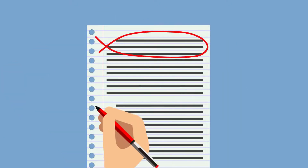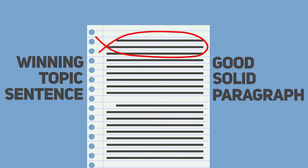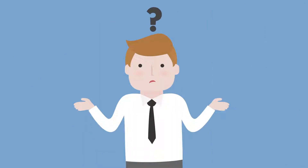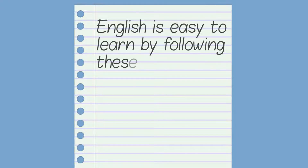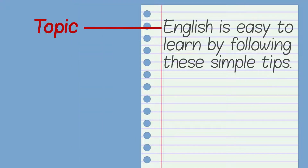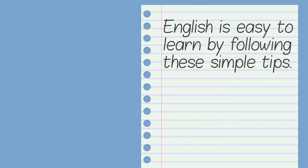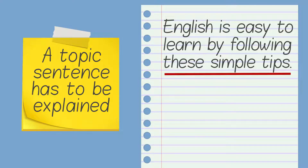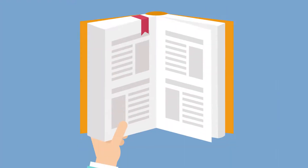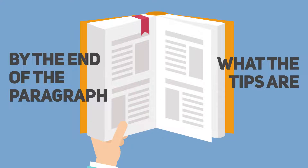We've covered what it takes to write a winning topic sentence and how important that is for good, solid paragraphs in English. But where do you go from here? For instance, let's say our topic sentence was 'English is easy to learn by following these simple tips.' The topic is English and the controlling idea is that it's easy to learn using a small number of tips. But what will you do from here? A topic sentence has to be explained — the reader will need to understand by the end of the paragraph what the tips are that will help him or her learn English easily.